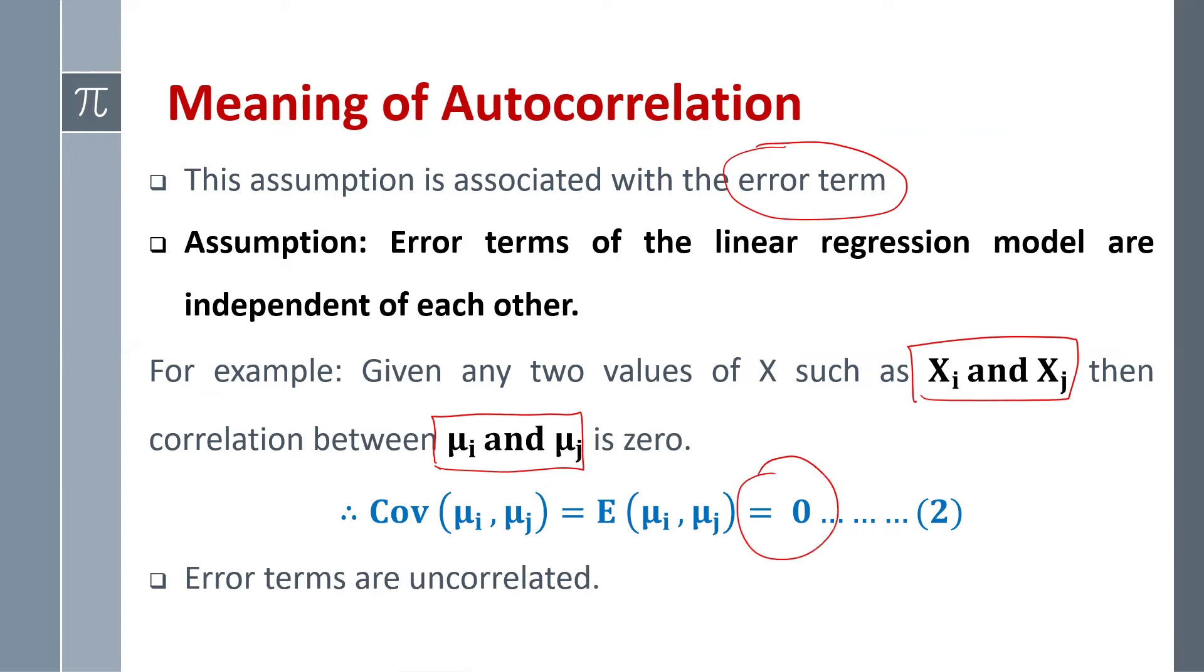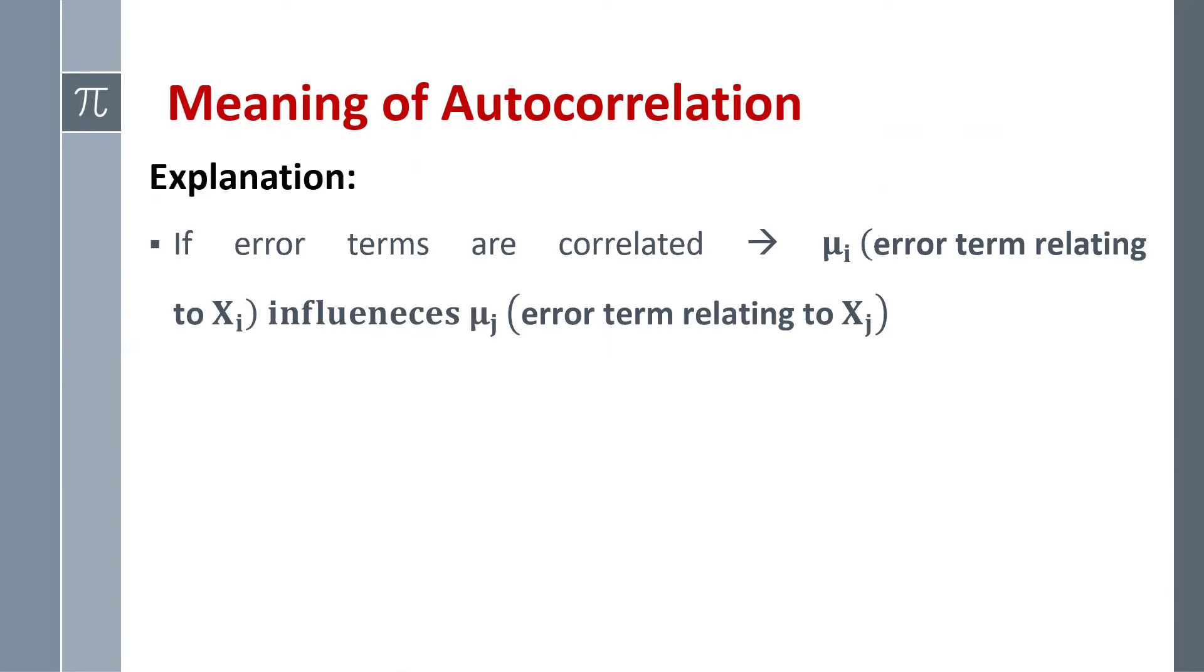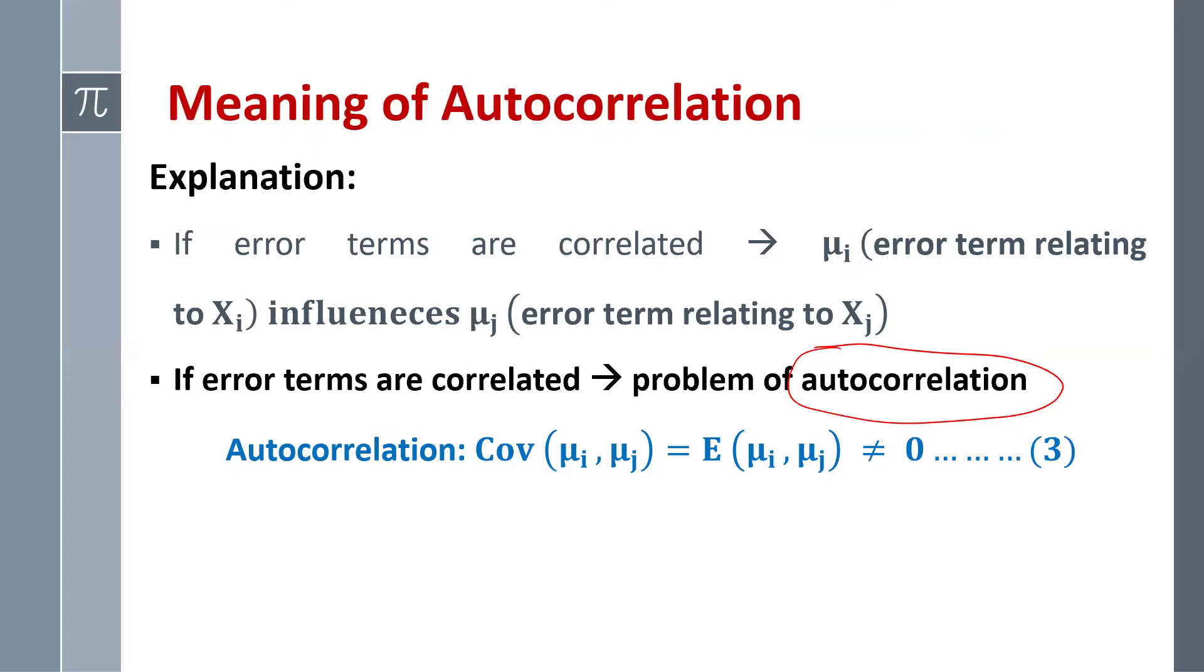If error terms are correlated, that means if mui influences muj, then we have the problem of autocorrelation. That means covariance of mui and muj is not equal to zero.